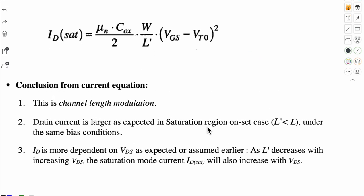So what are the conclusions from this current equation? This is the channel length modulation. And the drain current is larger as expected in saturation region.